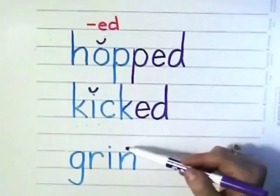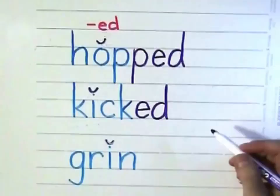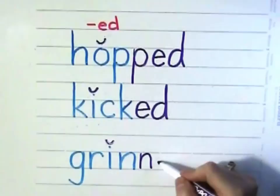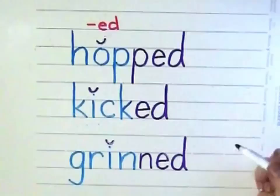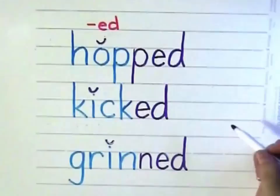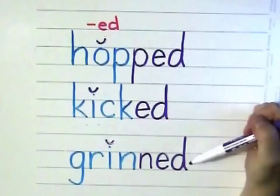All right, let's look at "grin." Here's our short vowel. You decide: do we need another N, or are we good the way we are? Yes, we need another N because we need two consonants before we add ED. So go ahead and fix it on your paper so that you have written "GRINNED." He grinned at my joke. Let's say these words together one more time: hopped, kicked, grinned. Very good — give yourself a pat on the back.